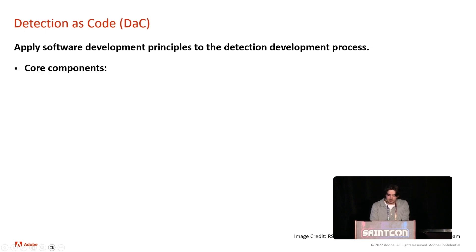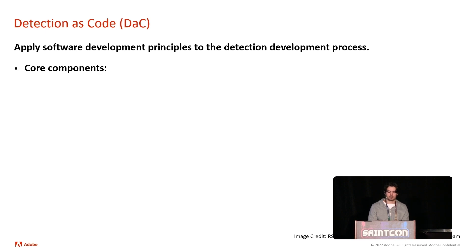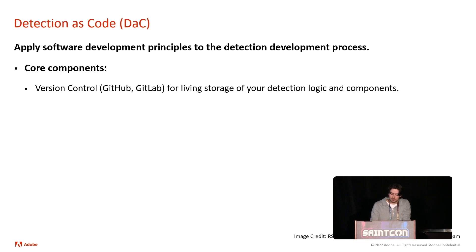Basically what we're doing with detection as code is applying software development principles to the detection engineering process. When you think about it, software engineers building a product are taking different modules, functions, and bundles of code, and that makes an overall application. With detection engineering, how that compares is we're taking a variety of different searches layered in different sections of the attack chain, and we're bundling those together — and together that is our detection framework, our detection coverage for the organization. When we want to apply software development principles to it, we want to use the same tools and same methodology that software engineers use. Things like version control: GitHub and GitLab can be used for a living storage place for your detection logic and components. You're building your searches and saving and storing them in things like GitHub, and that's going to provide version control, a way to keep track of who's making what change, being able to revert and see changes historically.